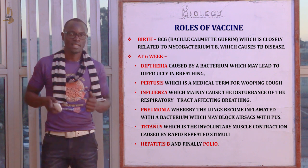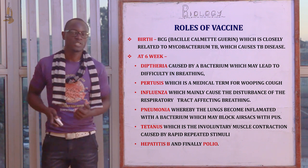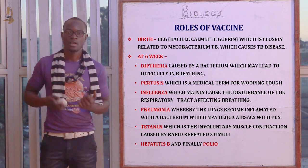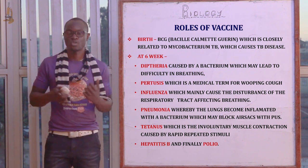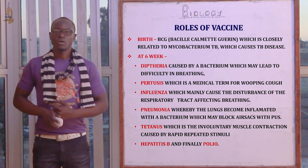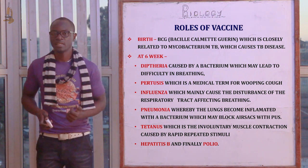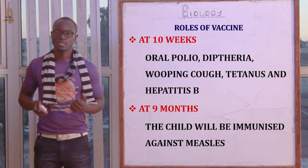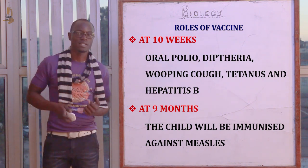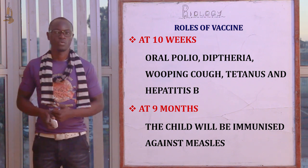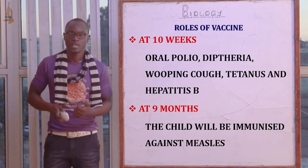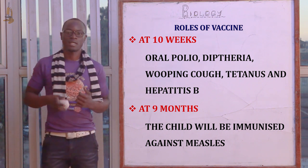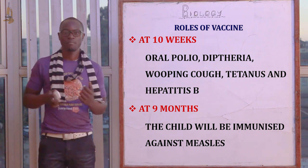Also at six weeks, the child is immunized against tetanus — involuntary muscle contraction caused by rapid repeated involuntary stimuli — as well as hepatitis B and polio. At ten weeks, the child is immunized against oral polio, diphtheria, whooping cough, tetanus, and hepatitis B. At nine months, the child is immunized against measles.